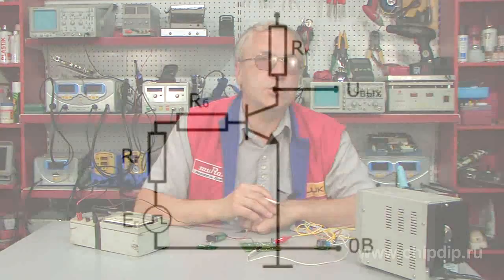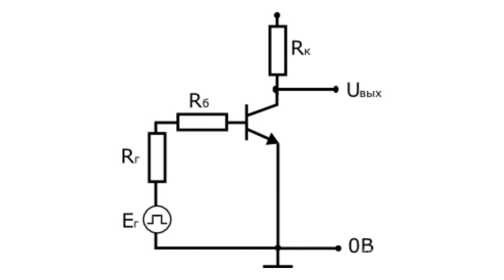Electronic switches are based on the operating principle of bipolar transistors. When there is no voltage at the transistor base in relation to the emitter, then the transistor is closed. The current does not pass through it, and a maximal signal — that is, all supply voltage — is present at the collector.